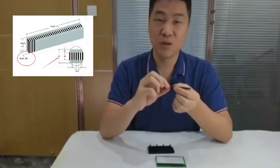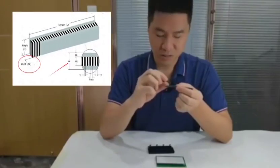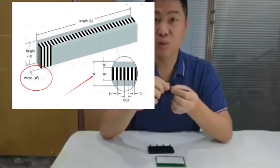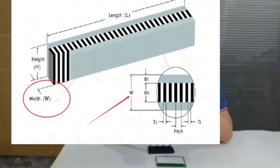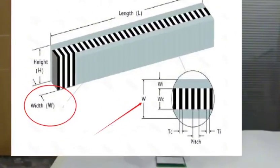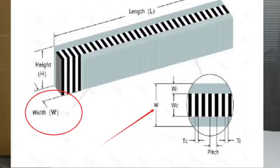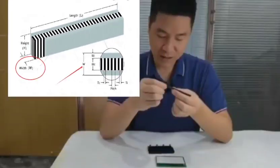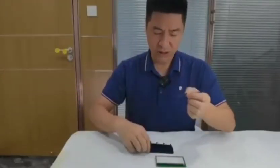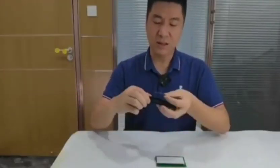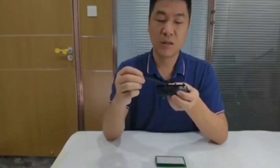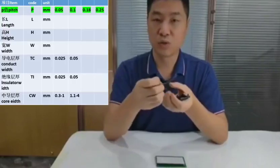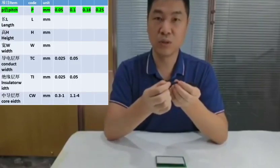Next is the thickness of the Zebra connector, also called the width. When placed in the card slot, it can generally move back and forth, but its position should not have too large a gap. We recommend a gap of less than 0.1mm, ideally 0.05mm of space.